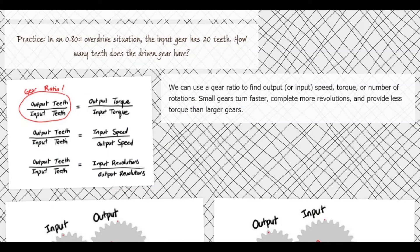Once we have the gear ratio — usually found by counting teeth — we can use it to find output or input speed, torque, and number of revolutions. A small gear turns faster and completes more revolutions, while a bigger gear turns more slowly but provides more torque. This makes sense from the torque formula: torque equals force times distance. Increasing the gear radius increases the distance from the pivot, so larger gears produce more torque.